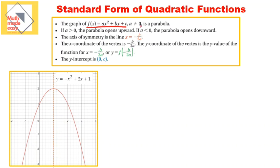a does not equal 0. Why? Well, if a is 0, this whole term will disappear and you won't have x squared anymore — it's going to be only x, so it's not a quadratic function anymore. It's a linear function. The graph of this function is a parabola.